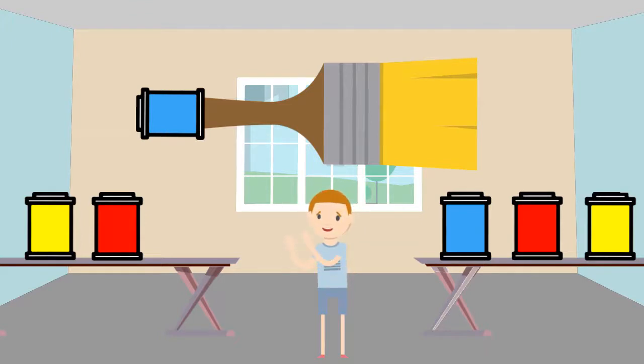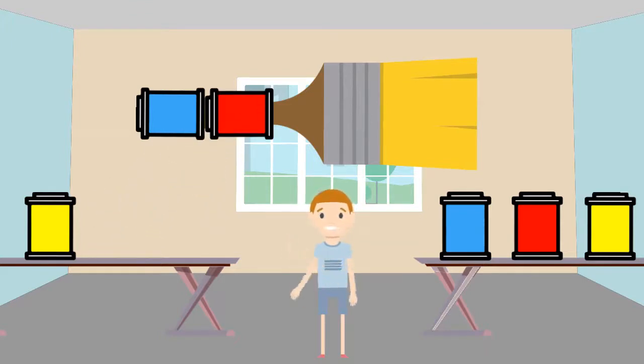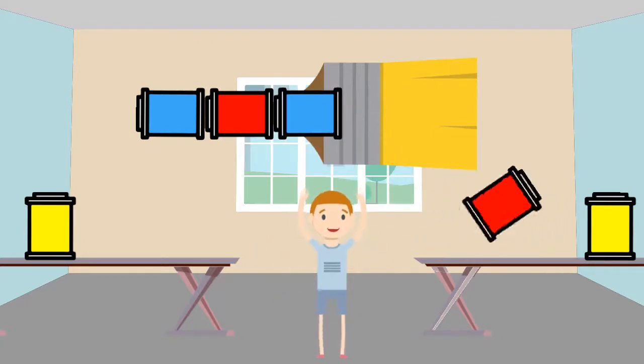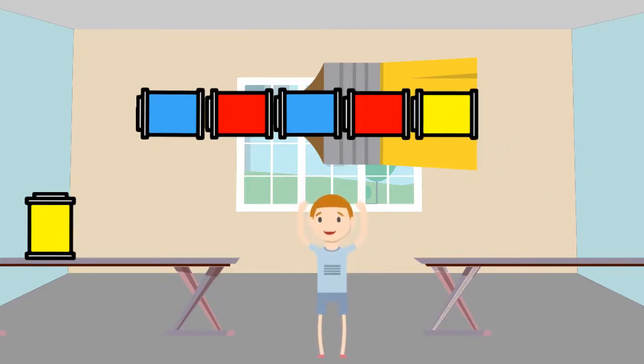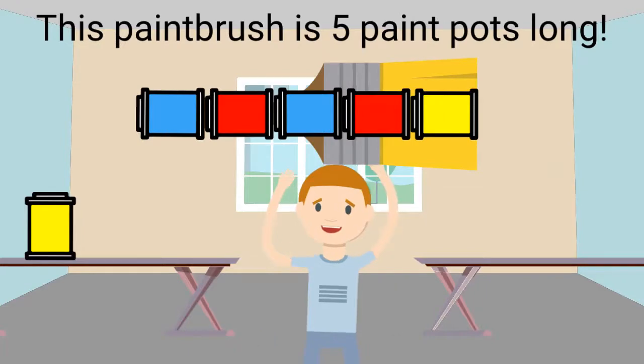Place the next paint pot up against the first one. Make sure there is not a space between the pots. We keep placing the paint pots side by side until we reach the other side of the paintbrush. How many paint pots long is this paintbrush? Correct! This paintbrush is five paint pots long.